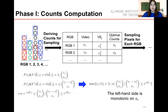Before sampling, we have to compute the sampling counts for each distinct RGB. Suppose for RGB theta_r, there are c_r pixels in video v. The combination to sample x_r pixels is choosing x_r from set c_r. The probability is 1 over the combination of x_r from c_r. The probability for the smaller video v' is 1 over the combination of x_r from c_r minus c_j, where j means the visual element different between v and v'. To ensure all visual elements in the video satisfy visual privacy, we derive the maximum x_r.